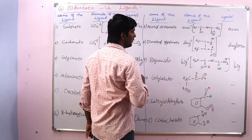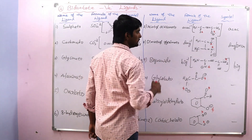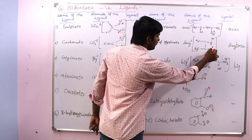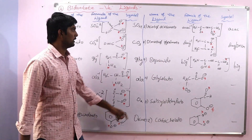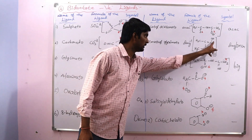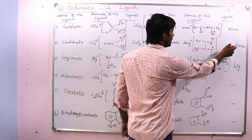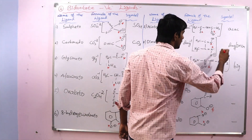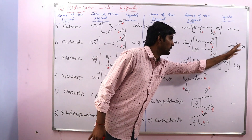Next is dimethylglyoximato, DMG⁻¹. Here two nitrogen atoms are the donor atoms. It is also a symmetrical ligand. The symbol can be written as DMG in small letters or capital letters — both are frequently used.